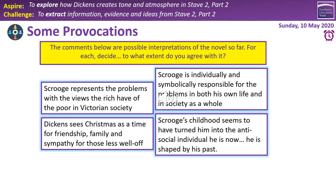Third provocation: 'Scrooge is individually and symbolically responsible for the problems in both his own life and in society as a whole.' Yes, to an extent — Scrooge makes choices in his past that lead to his current circumstance and the unhappiness of those around him. However, it's not as simple as that. His childhood — when we see him abandoned at school — wasn't a choice he made. He's only partially responsible, and his recognition of the things he can change is an important watershed. On a broader symbolic level, society's mistreatment of the poor, needy, and young also leads to further problems later on. Fourth: 'Scrooge's childhood seems to have turned him into the antisocial individual he is now.' Yes, partially correct. We do see him in Stave one — lonely and isolated. However, there are still signs of hope in Stave 2 — when we see him with Belle, at Fezziwig's party. He's not entirely beyond redemption, but also there are choices he makes later which cause him to be the way he is.